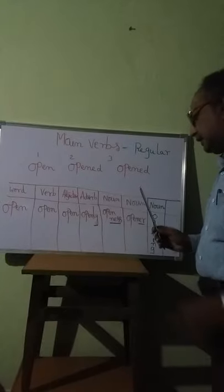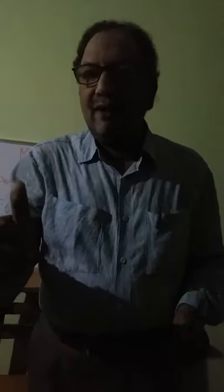Now, come to the word 'opener.' An opener is an instrument used to open a bottle, like a Coca-Cola bottle. Suppose you went to a shop and wanted to drink Coca-Cola — you ask: 'Give me the opener.' The shopkeeper gives you the opener, and with it you open the Coca-Cola bottle. This is the way of making sentences in your day-to-day conversations.